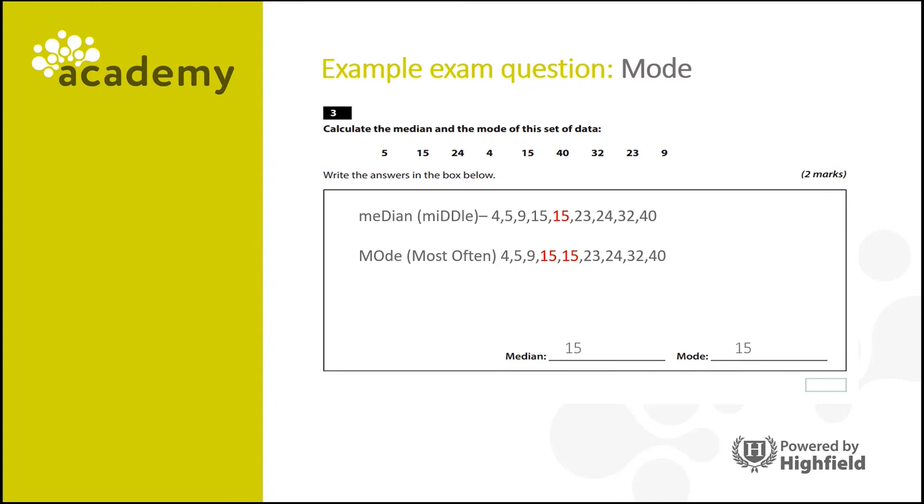Did you get them right? So remember, the median is the middle value. And in this case, the middle value is 15. And mode is the most often. So in this case, 15 appears twice, which is the most of any value. Therefore, the mode is also 15.